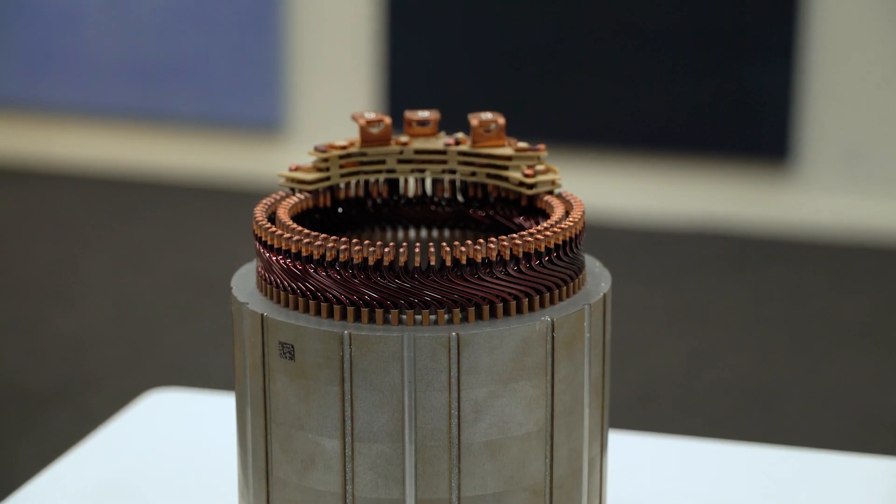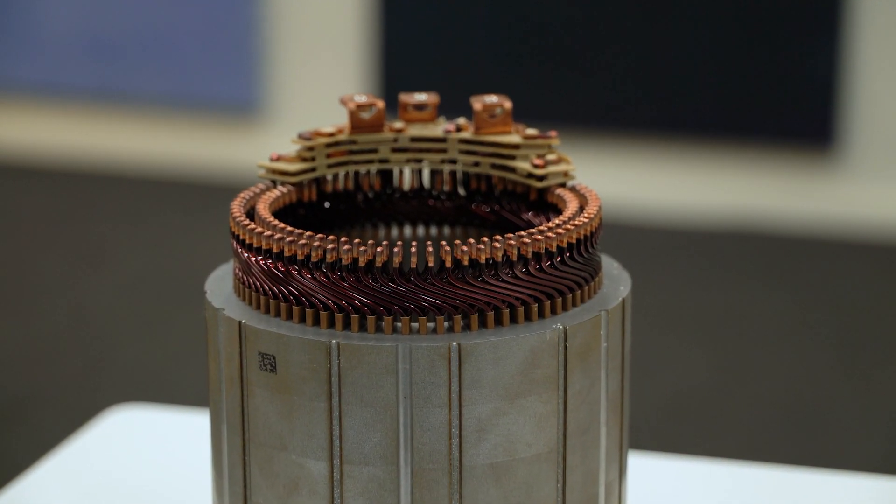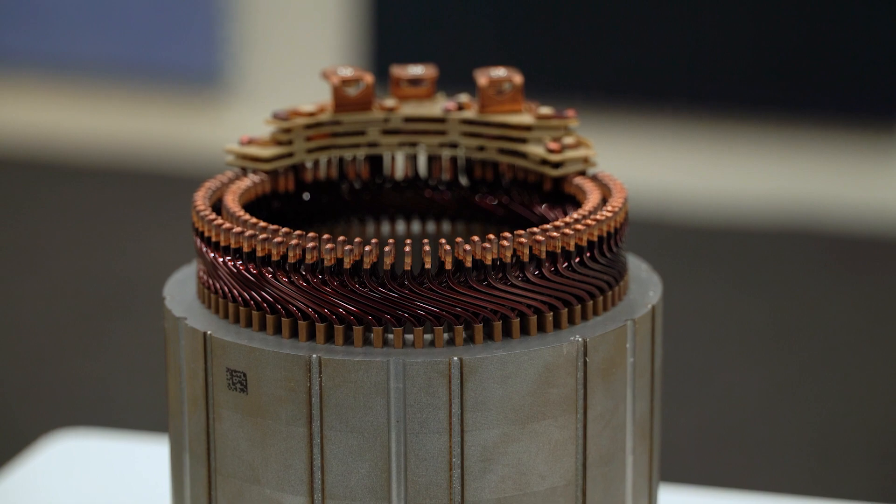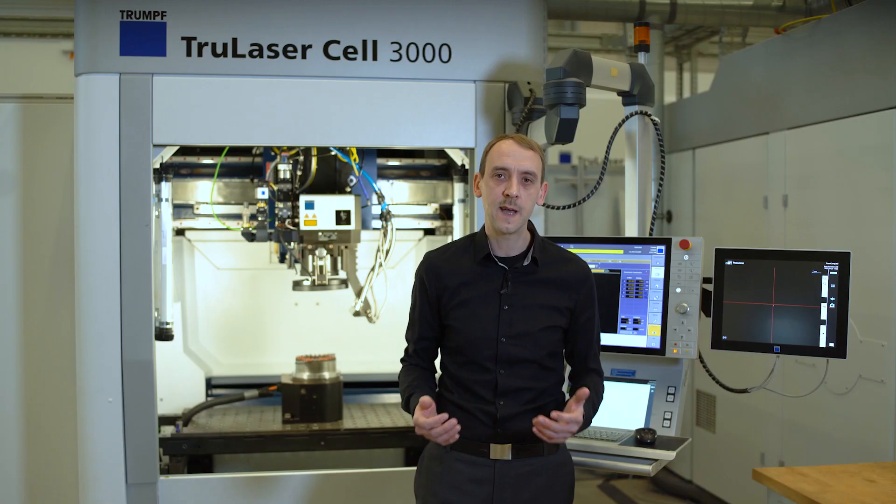A typical hairpin weld like this one here takes around 100 milliseconds. In general, the minimum welding time needed is given by the wire cross-section. The final stator consists of several hundred hairpin welds carried out in sequence, plus the connections of the bus bars which connect the motor to the electric powertrain.